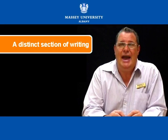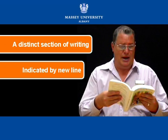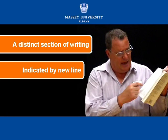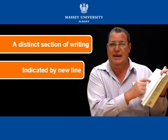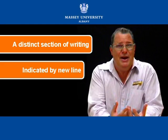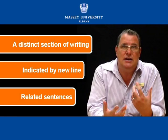Let's kick off with asking the question: what is a paragraph? A paragraph is a distinct section of writing, and it's usually indicated in text with a new line. If you pick up any book and open it at any page, you can see immediately where a paragraph begins and where it ends. It always starts on a new line, and usually the first line is slightly indented. A paragraph is a collection of related sentences which deal with one idea or topic, and it has a single focus.